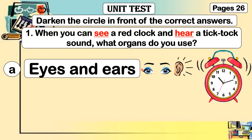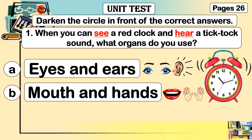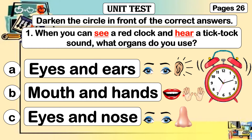Do you use your eyes to see? Do you use your ears to hear sound? Letter B: mouth and hands — do you use your mouth to see or your hands to hear? Letter C: eyes and nose — do you smell the clock? The answer in number one is letter A, eyes and ears. Shade your answer. Now, you answer number two until number ten.